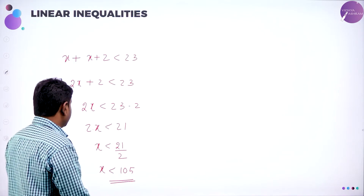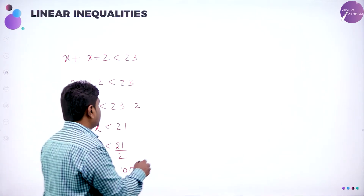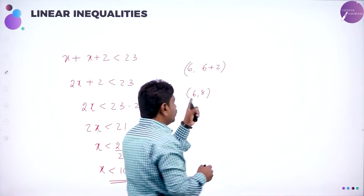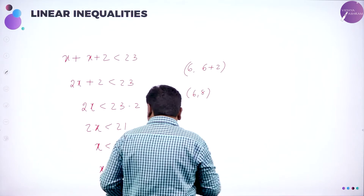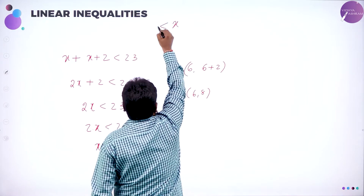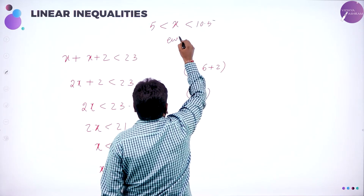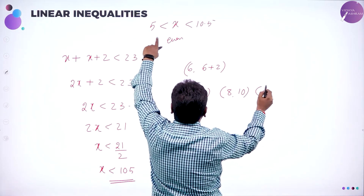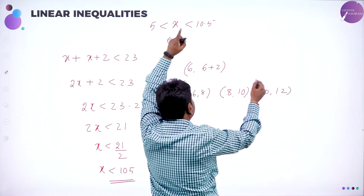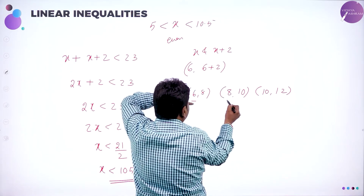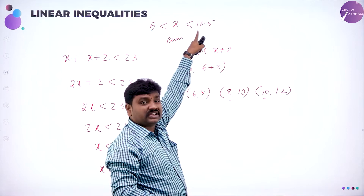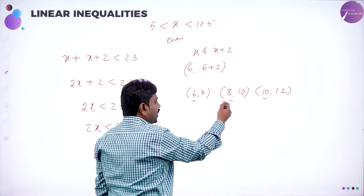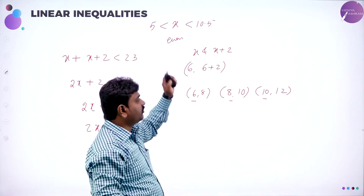Now choose the numbers: first, they should be greater than 5 and they should be even. Even numbers greater than 5 means 6. So 6 and 6 plus 2 is one pair. X should be greater than 5 but less than 10.5 and it should be even. Even numbers greater than 5 and less than 10.5: I can choose 6, 8, 10. Can I take 10? Yes — because greater than 5 and less than 10.5. I can't take x more than 10 because x should be less than 10.5, so stop it at 10.